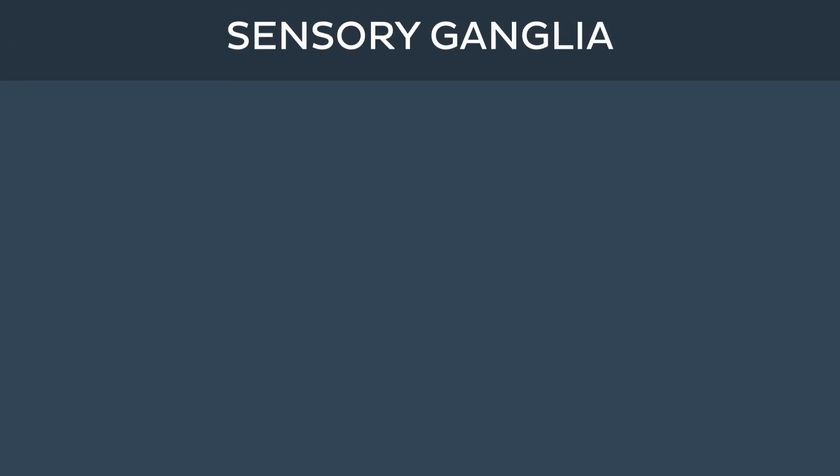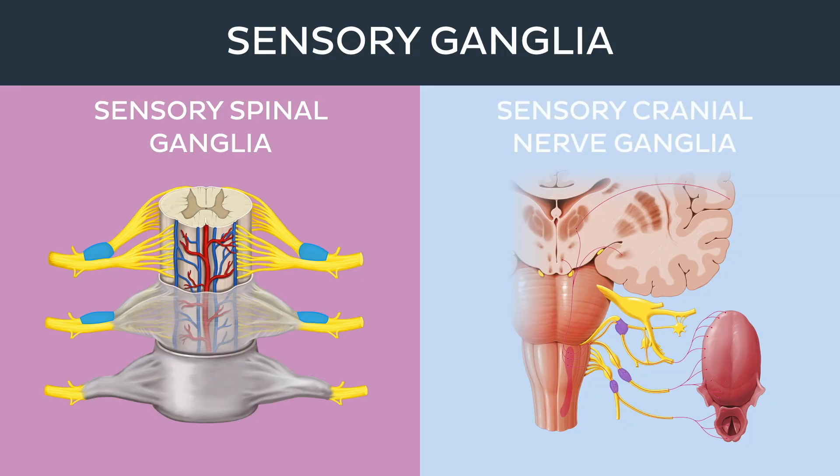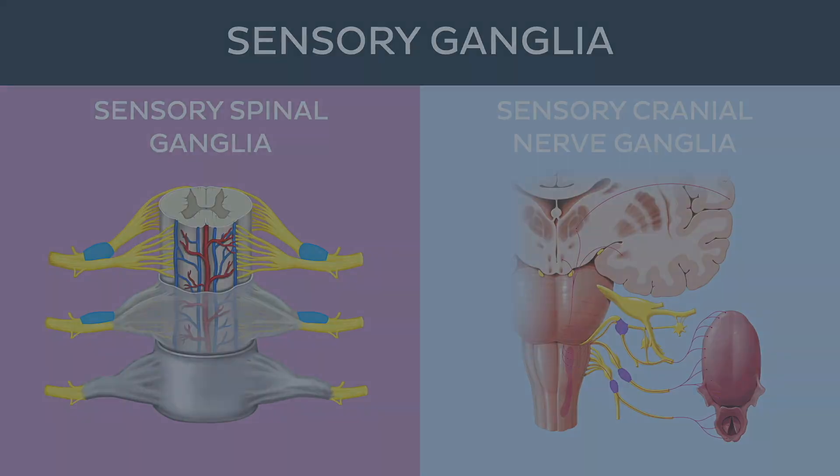There are two types of sensory ganglia: the sensory spinal ganglia, or dorsal root ganglia as they are known, and the sensory ganglia of the cranial nerves.